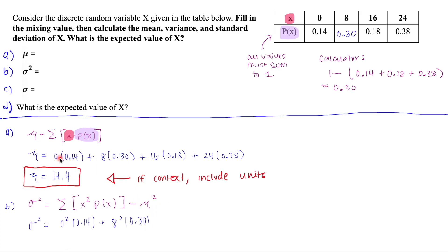So exactly how we wrote it for the mean, but now we square each of those x values. And then once we're done calculating that, then we're going to go ahead and subtract the value of the mean squared.